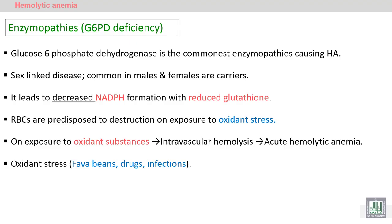Another type of hemolytic anemia is enzyme-related hemolytic anemia — specifically a disease of the RBCs' enzymes. We have many enzymes in RBCs, but we will concentrate on the very important enzyme: glucose-6-phosphate dehydrogenase, abbreviated as G6PD.